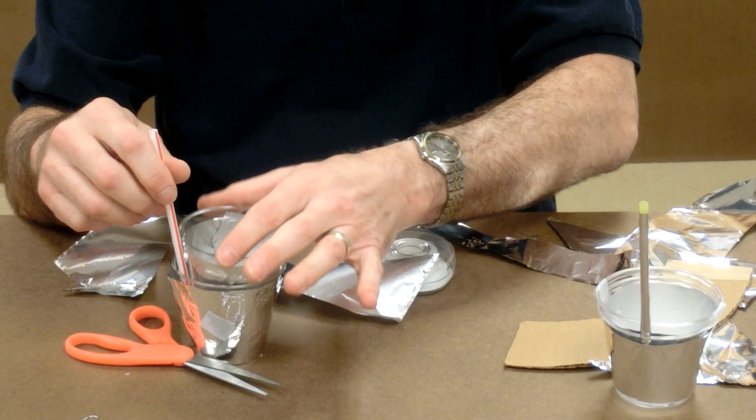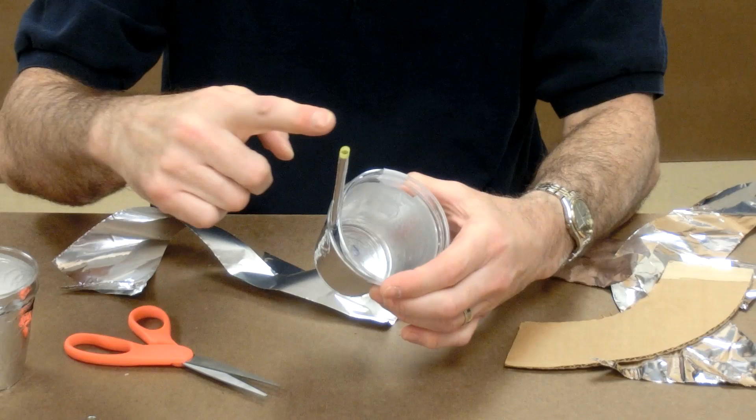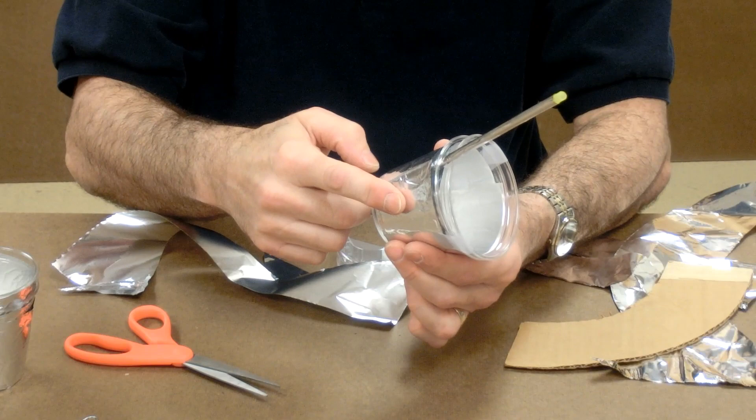So now we have foil on the outside. We've got plastic cup and then foil on the inside. The straw, metal straw, is connected to the inner foil so that will be the way we have outer foil and inner foil and we can connect both of them.